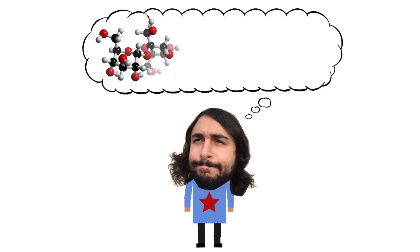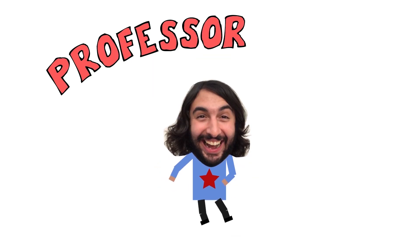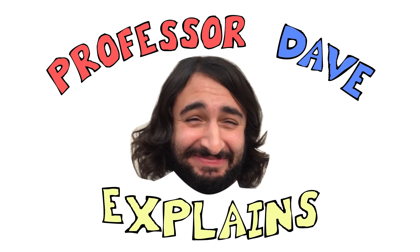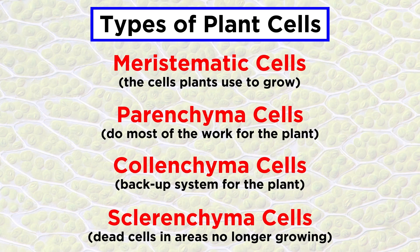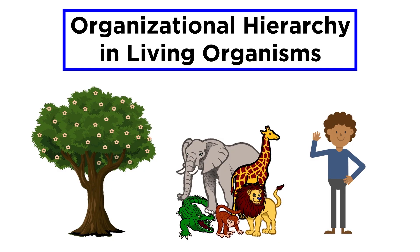He knows a lot about the science stuff — Professor Dave Explains. We just talked about the different types of plant cells, but now we need to understand how those cells organize themselves to form larger structures. First, let's review the levels of organization in living organisms.